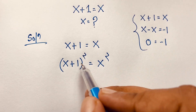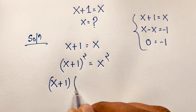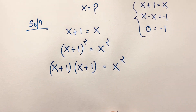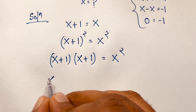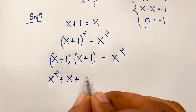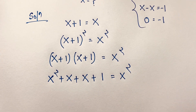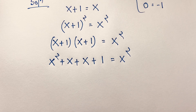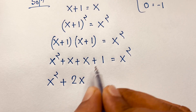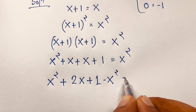Now here x plus 1 whole to the power 2: I can say that this is (x+1) times (x+1) is equal to x squared. Expanding: x times x is x squared, plus x times 1 is x, then 1 times x is x, and 1 times 1 is 1, equals x squared. Now I move x squared to this side — it becomes negative — so x squared plus x plus x, which is 2x, plus 1, minus x squared is equal to 0.